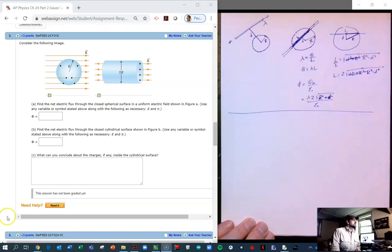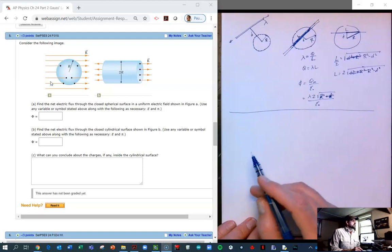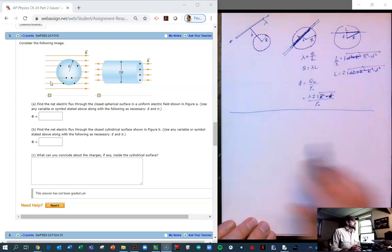So in this problem, which is number 5 in the Webassign and number 18 in Sirway and Jewett chapter 24, we finally get to the left-hand side of the flux equation. So in the first problem, part A,